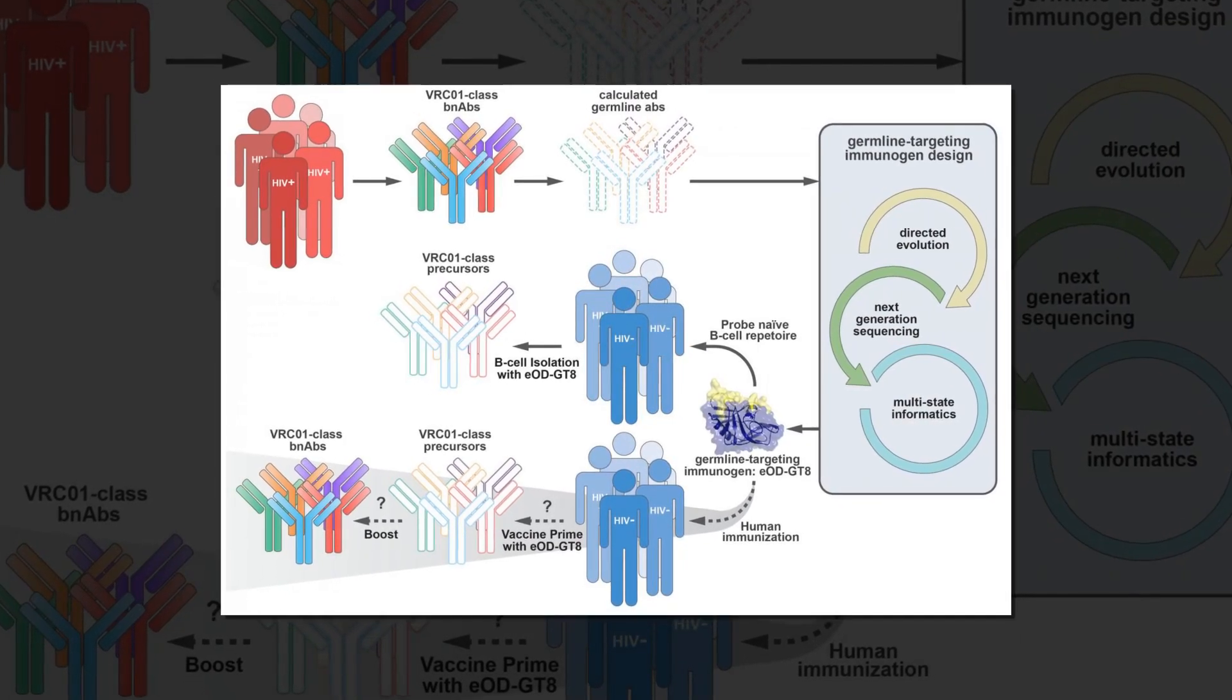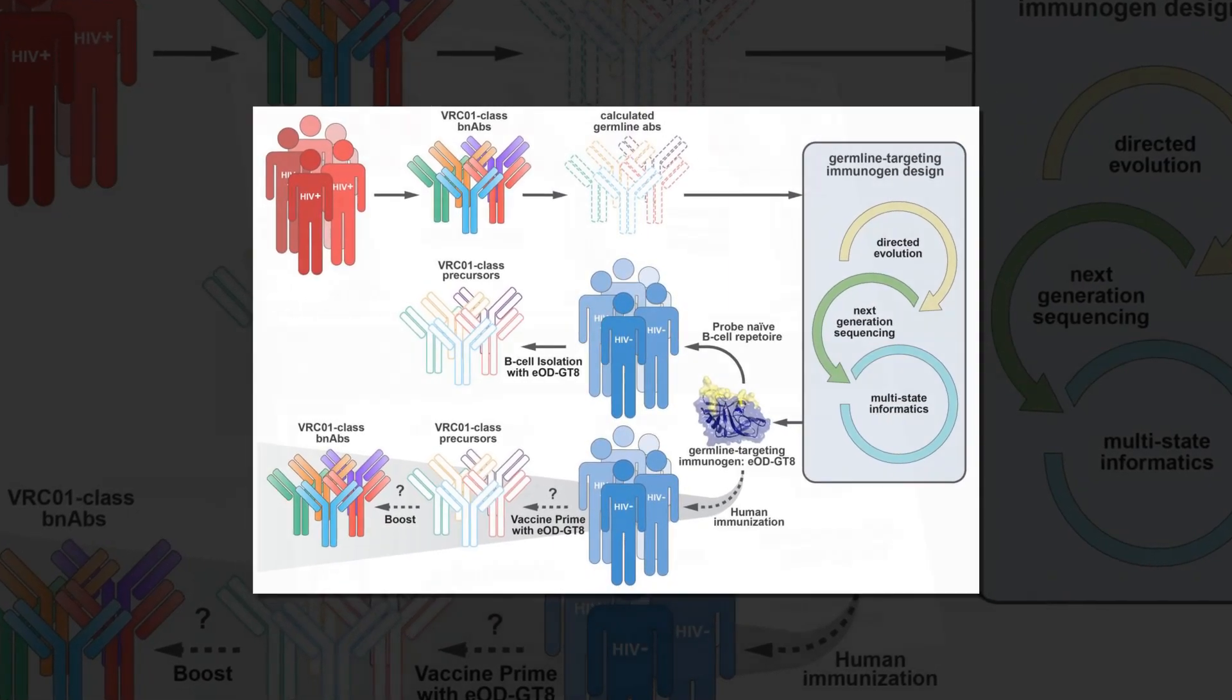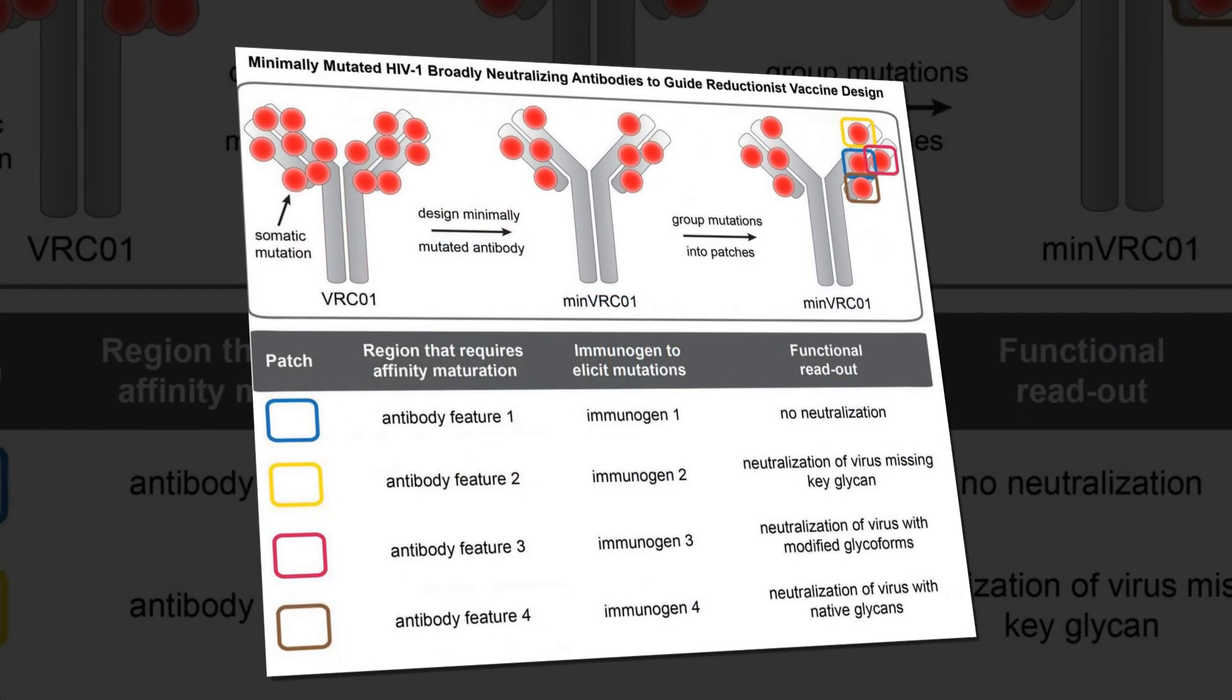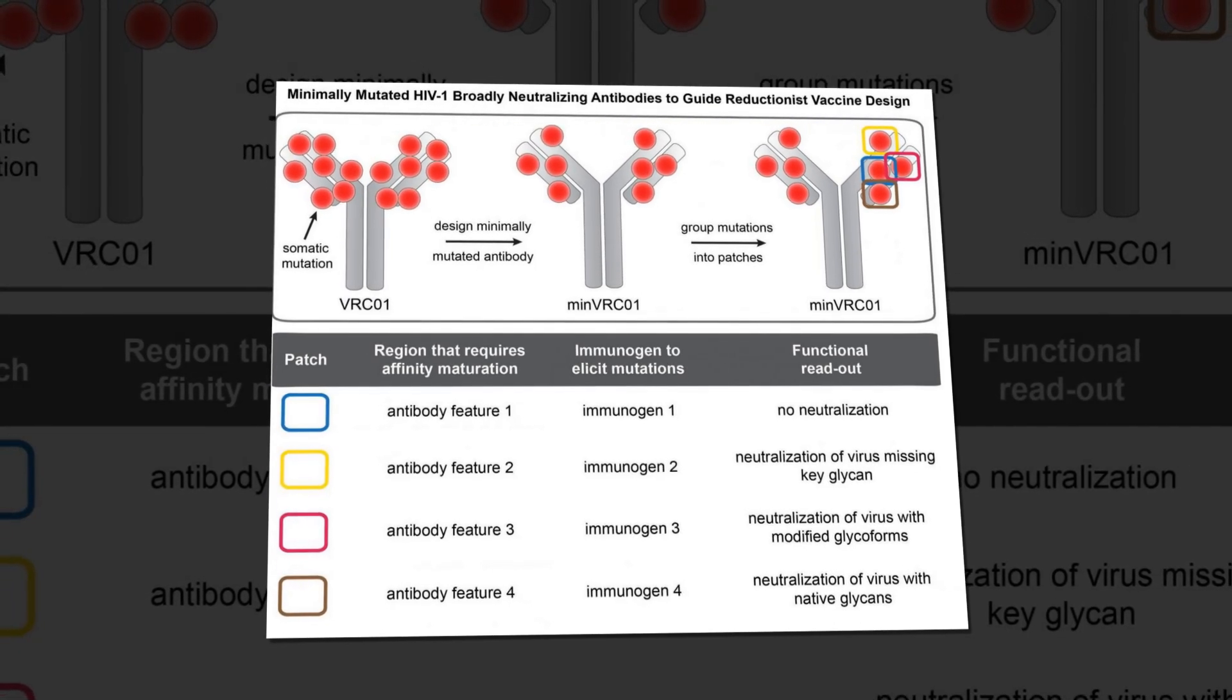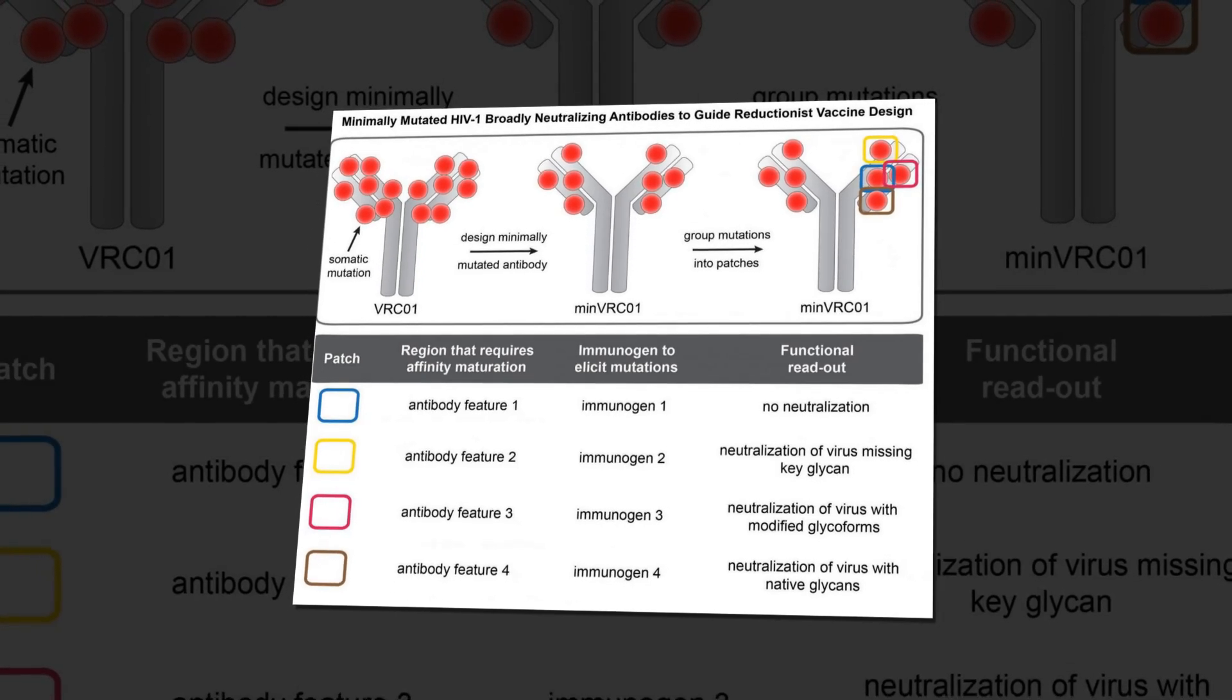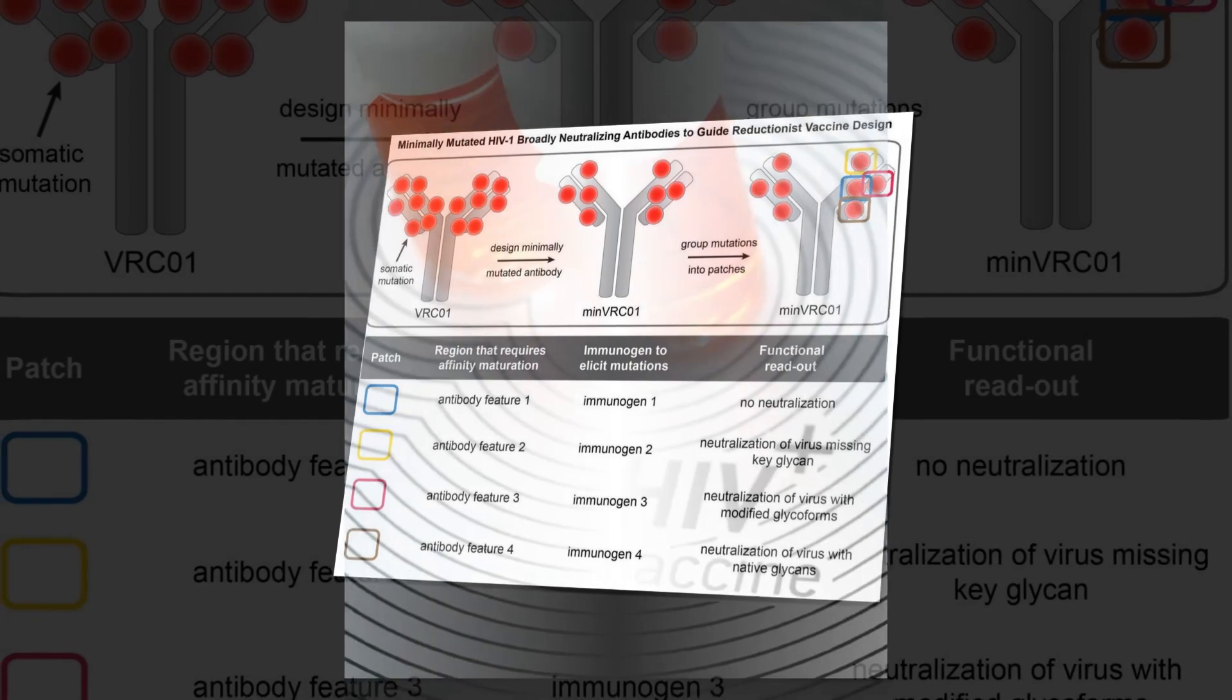Driving the process to fruition—the production of bnAbs that neutralize primary HIV-1 viruses—remains to be achieved, Dr. Roger Sanders of Amsterdam University Medical Center and Dr. John Moore of Weill Cornell Medicine wrote in a commentary accompanying the reports. However, these studies provide valuable guidance as to what the next immunogens in the sequence might look like.